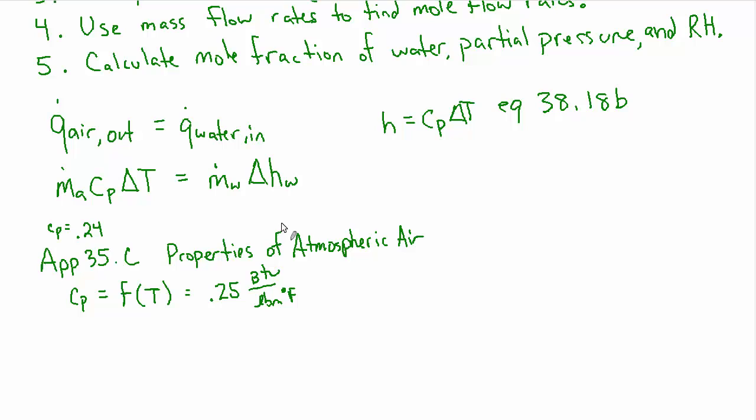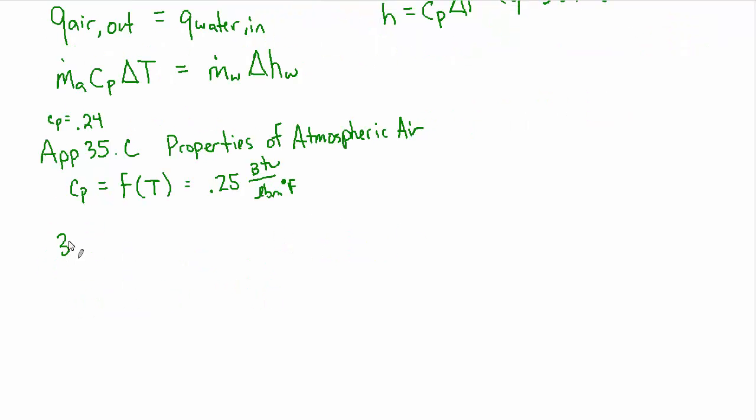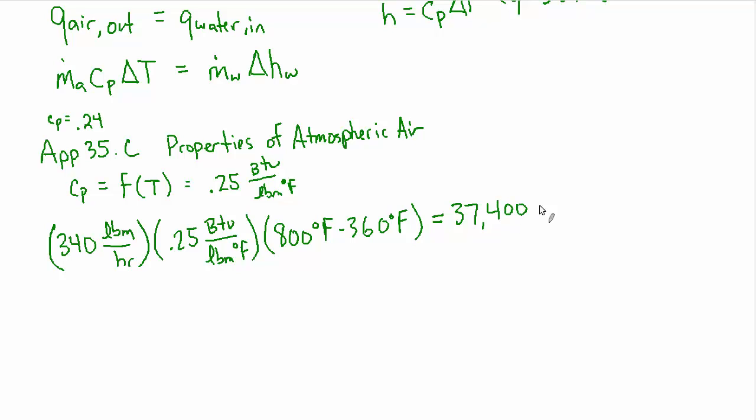So let's go ahead and do it. So the mass flow rate is 340 pounds per hour. CP we're taking as 0.25 BTU per pound. And the delta T is 800 degrees Fahrenheit minus 360 degrees Fahrenheit, which ultimately gives us a heat transfer of 37,400 BTU per hour. So that's how much heat is coming out of the air and thus going into the water.